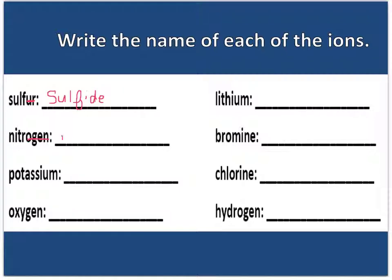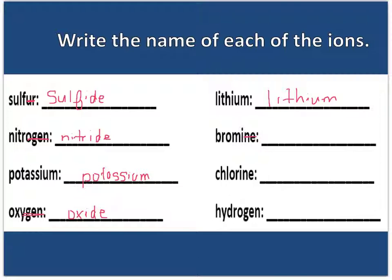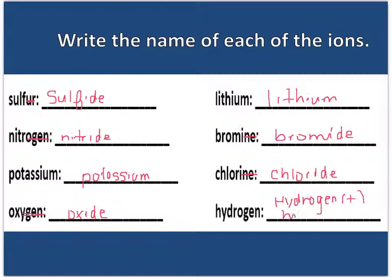Nitrogen is a non-metal, so we remove the -OGEN and we get nitride. Potassium is a metal, so it remains the same. Oxygen — we take off the -YGEN and add -IDE, so we get oxide. Lithium is a metal, so it stays the same. Bromine is a non-metal — take off the -INE and add -IDE, so we get bromide. Chlorine — same, non-metal — take off the -INE and add -IDE. Hydrogen can behave like a metal when positively charged, staying as hydrogen, or it can be hydride when negatively charged.